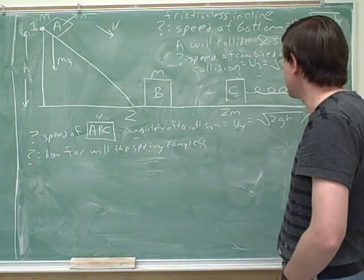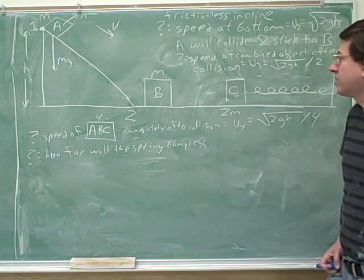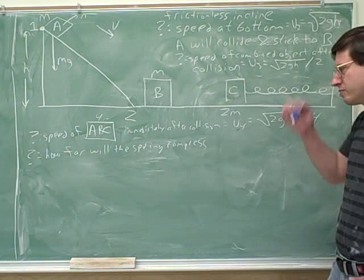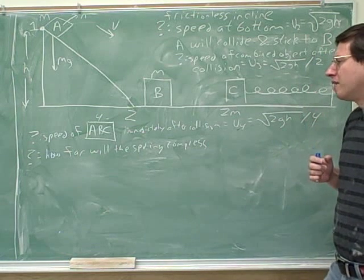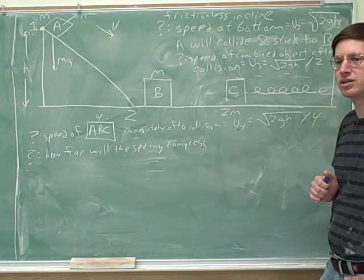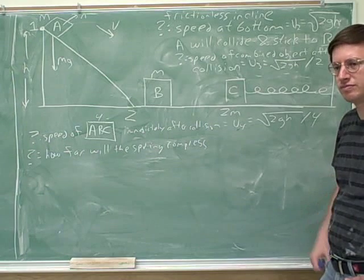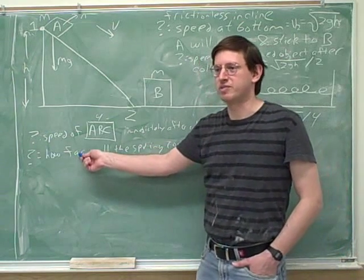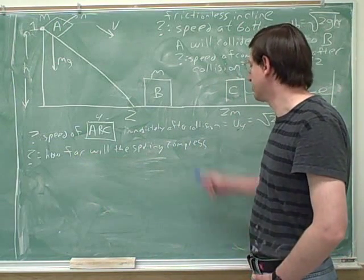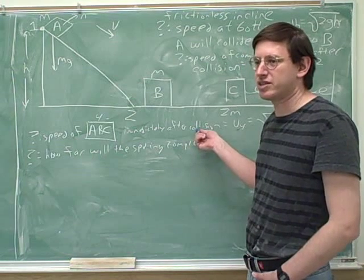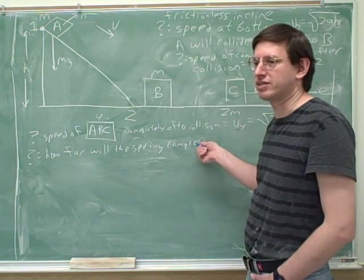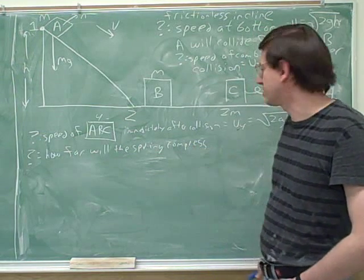One thing that might help is that this is not a collision anymore. We simply have a single object moving from one place to another. Remember, work and energy is a good approach when you're dealing with speed and distance — and that's exactly what our question is about. Conservation of momentum is for collisions, so with a single object and a question about distance, conservation of energy is the way to go.